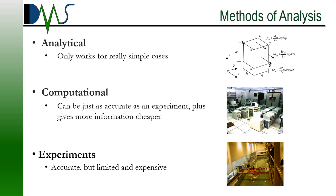We can't really use experimental methods to explore new possibilities. We can really only test for situations that we already know about. And then we have the middle ground that's been created: computational methods. This can be just as accurate as experimental methods, but it can also be cheaper, and it gives us a lot more flexibility. It allows us to branch out into new unknown territories and gives us the ability to dive into new details. It offers the flexibility of analytical methods and the detailed accuracy of experimental methods — it's sort of a happy medium of both.